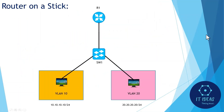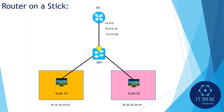In legacy inter-VLAN routing we used two links between the switch and router for two VLANs, but in router-on-a-stick we use only one link. On the router's physical interface we create two sub-interfaces — for example, fa0/0.10 for VLAN 10 and fa0/0.20 for VLAN 20. This number doesn't need to match the VLAN number, but it is good practice to do so. When VLAN 10 sends a packet, it uses the single link between the switch and router through a virtual interface, and returns back on the same link through another virtual interface.